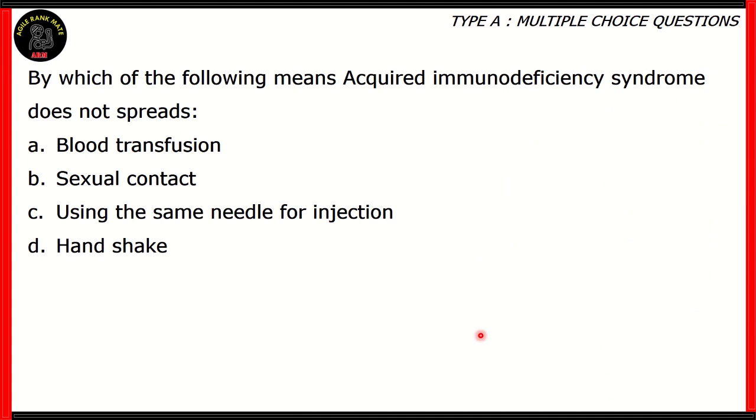By which of the following means does acquired immunodeficiency syndrome not spread? Is it A, blood transfusion, B, sexual contact, C, using the same needle for injection, or D, handshake?